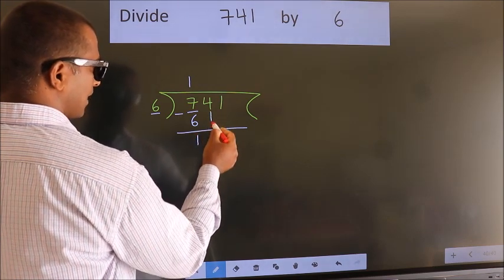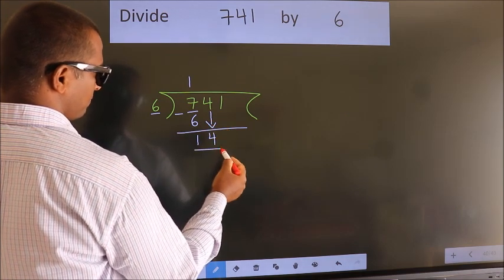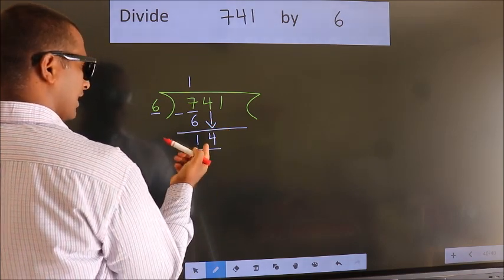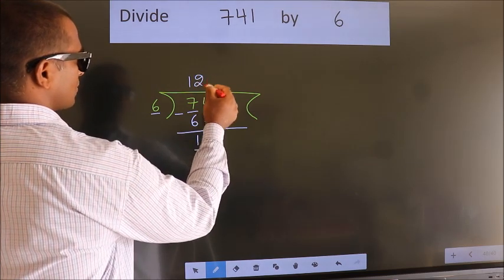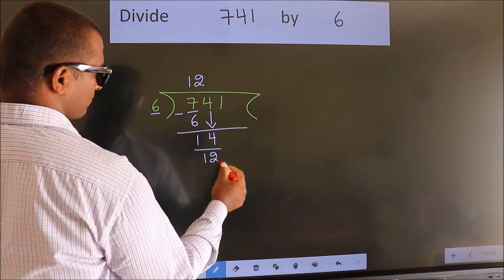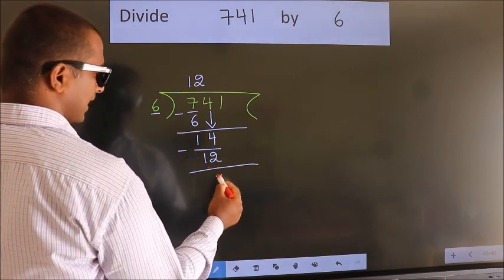After this, bring down the beside number. So, 4 down. Now, we subtract. We get 2.